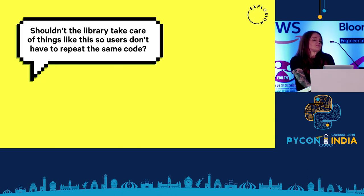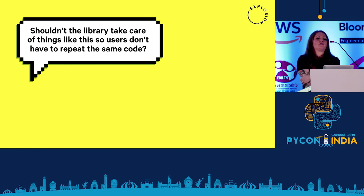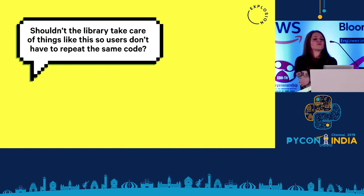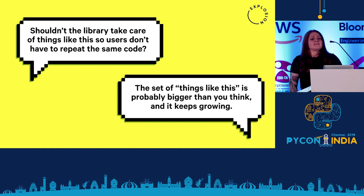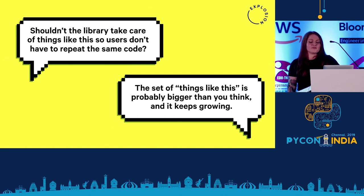You might say: but that means I have to write a lot of the same code, and keep repeating it. Why can't the library just do things like that? Well, the set of 'things like that' is probably bigger than you think, and it keeps growing and changing. You'd have to think of all of that, which is going to be pretty difficult.